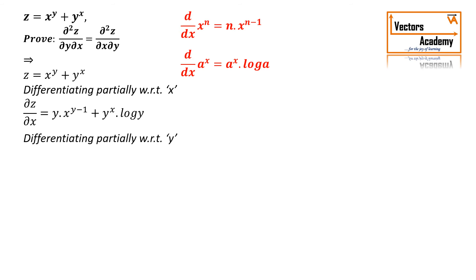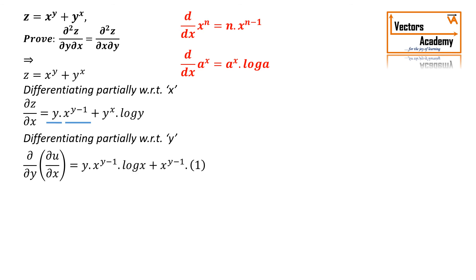Now we need to differentiate this result with respect to y, treating x as constant. The first term contains two functions both involving y, so we apply the uv rule: y into derivative of x raised to y minus 1, which gives x raised to y minus 1 into log x, plus x raised to y minus 1 into derivative of y, which is 1. For the second term, both functions contain y, so applying uv rule: y raised to x into derivative of log y is 1/y, plus log y into derivative of y raised to x is x into y raised to x minus 1.